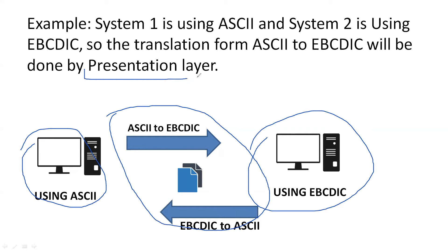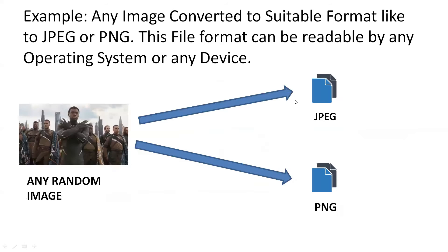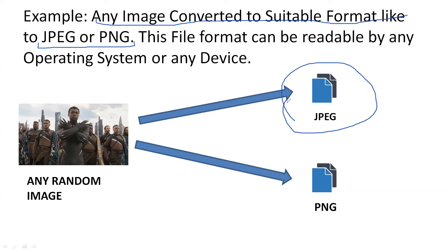Another example: if you have an image in any format and want to open it on a device, it needs to be converted into a specific format like JPG or PNG. Other types like WebP can also be converted into a format readable by your network. Generally, JPG or PNG are the formats seen over networks.